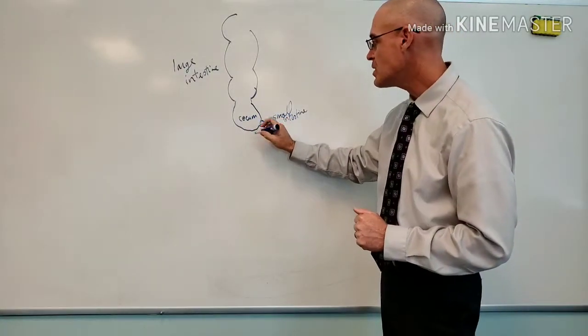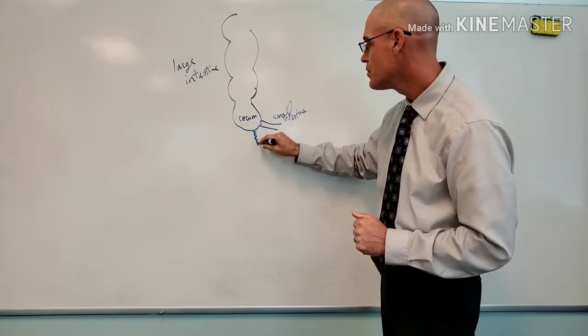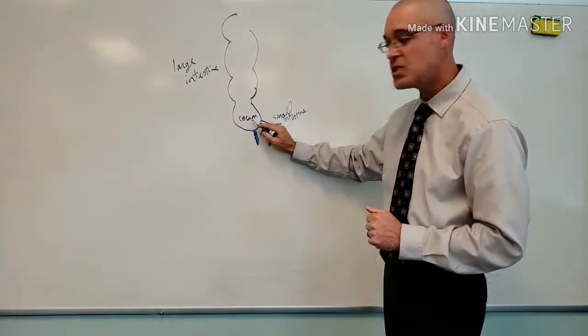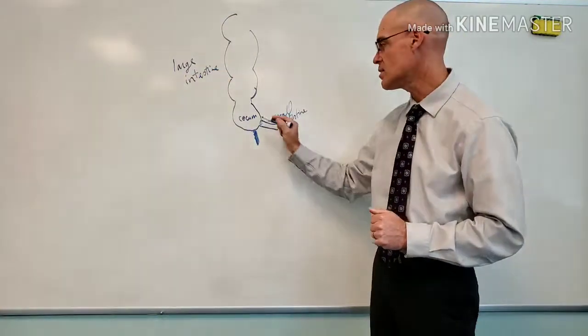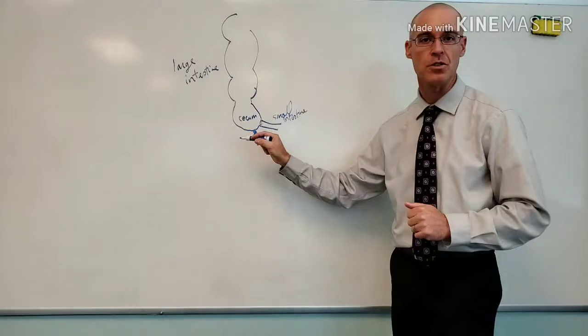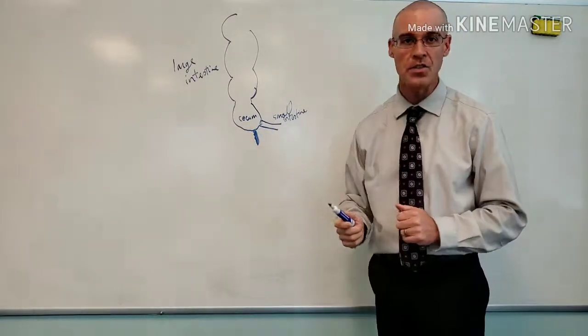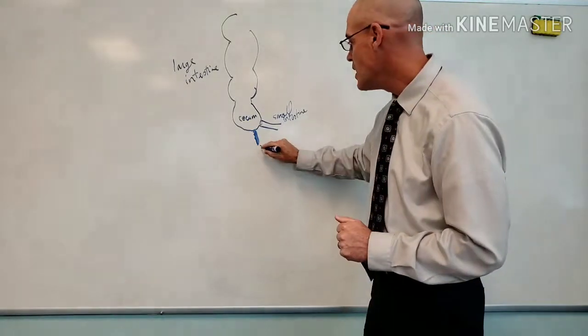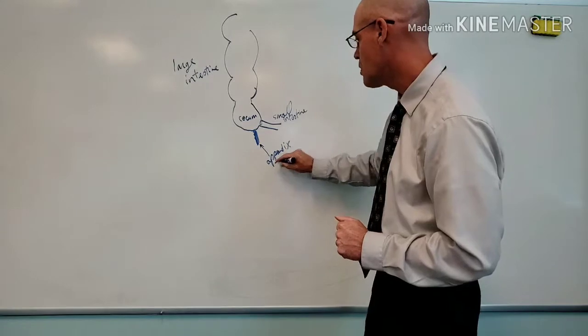So the appendix is located right here, just kind of draw it out here, on the cecum, so it is technically on the large intestine, not the small. But it's really at this juncture between the small and the large intestine, again on the cecum. So this would be our appendix.